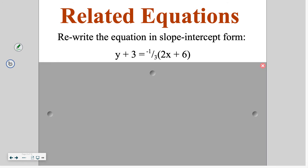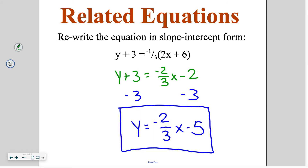Go ahead and try this one on your own. Start with the distributive property, which gives us negative 2/3 x minus 2. Then subtract 3 from both sides, giving y equals negative 2/3 x minus 5.